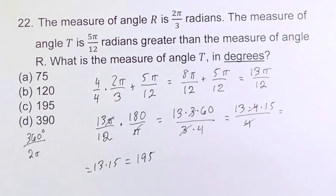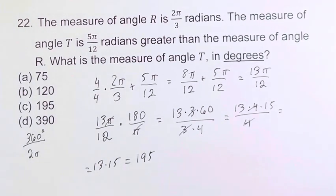On the actual SAT you're going to be able to use a calculator, but since I don't have that here I just showed you how you'd simplify it without doing some long multiplication. 195°C is going to be your final answer.